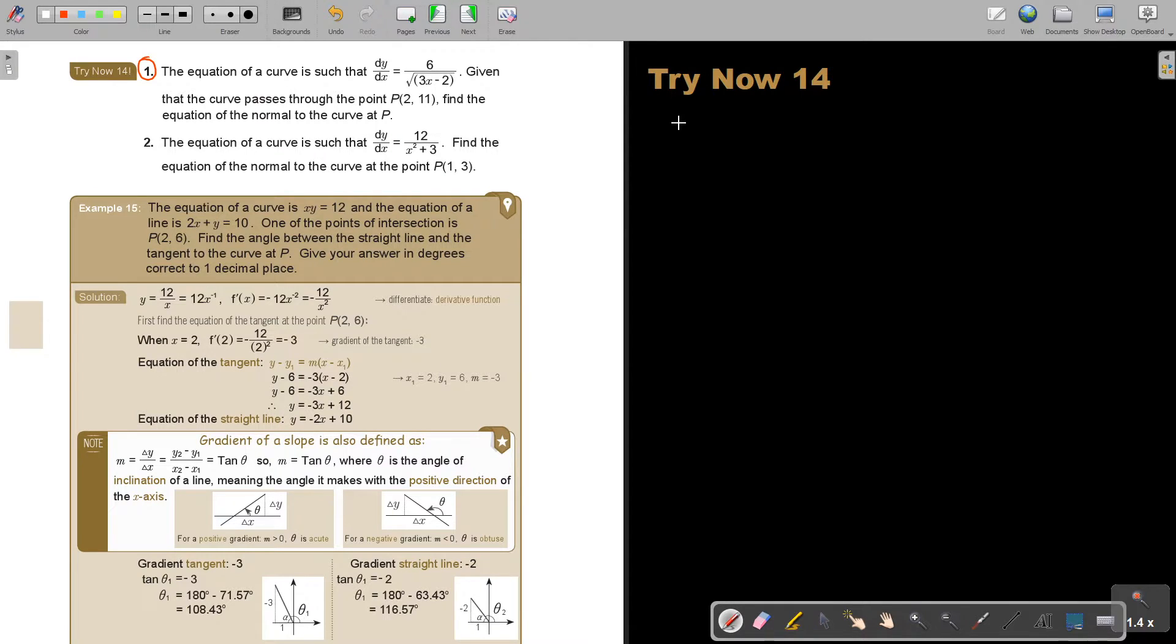Let's look at number 1. Again, the equation of a curve is such that, so this is the derivative function, it's already differentiated. Given that the curve passes through the point, find the equation of the normal. So in this case, I always start with the function.